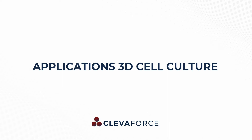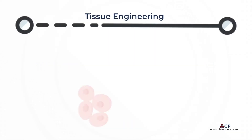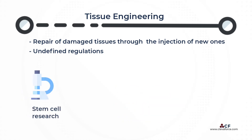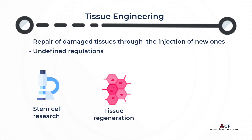3D cell culture has a wide range of applications, including tissue engineering. Tissue engineering specializes in the repair of damaged tissues through the injection of new ones generated by 3D cell culture. As 3D culture remains a reliable method for conducting stem cell and cell differentiation research, it may have greatly aided tissue regeneration and reconstruction by providing alternative approaches to tissue repair.